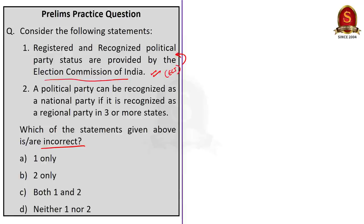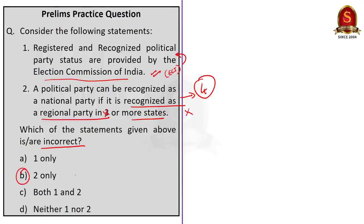Moving on to the second statement: a political party can be recognized as a national party if it is recognized as a regional party in three or more states. This statement is actually incorrect, because in our discussion we saw that a political party can be recognized as a national party if it is recognized as a regional party in four or more states. So statement 2 is incorrect, and since the question asked for incorrect statements, the correct answer is option B, 2 only.